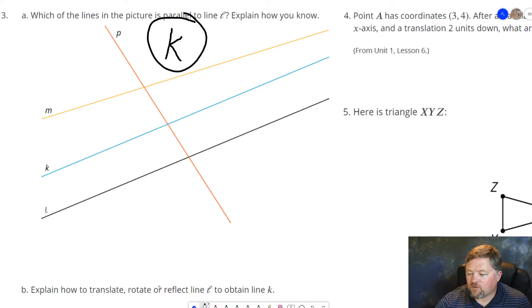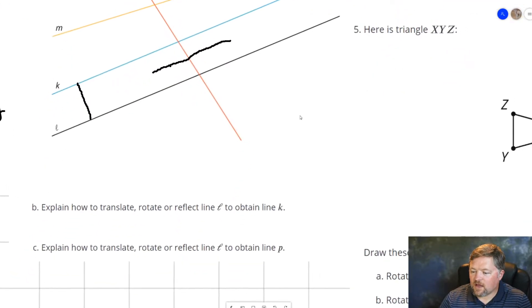Explain how to translate, rotate, or reflect line L to get line K. So we could translate line L this far, from here to here. That would take line L and put it on K. How about a rotation? For a rotation, we just need a point equidistant from the two, the midpoint between these two. And if we rotate it 180 degrees, line L rotated 180 degrees around this point will become line K. How about a reflection? If we reflected it over the line in the middle between those two, then L would become K. So you can do that all three different ways.